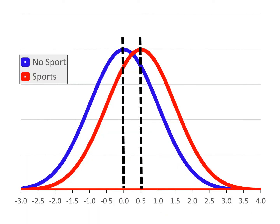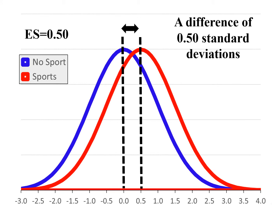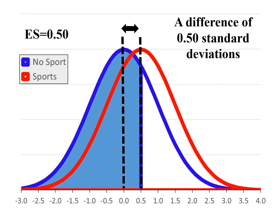In the end, once you know the effect size is equal to 0.5, it tells you that the difference between means is 0.5 standard deviations. We knew the mean for sports kids was 0.5 standard deviations higher than the mean for kids not in sports. So based on an effect size of 0.5, we look up the percentage of scores below a z-score of 0.5, and it tells us the mean for the higher group is at the 69.15th percentile of the lower group.